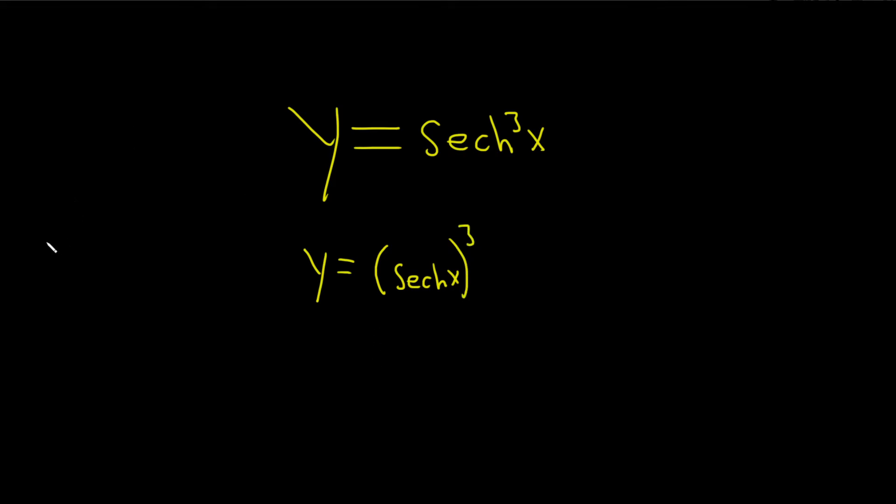And the formula that we're going to need to do this problem is basically the derivative with respect to x of the hyperbolic secant of x. So this is actually equal to negative hyperbolic secant of x, hyperbolic tangent of x.